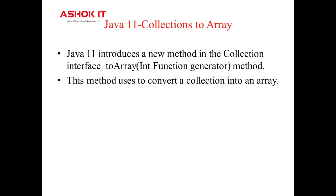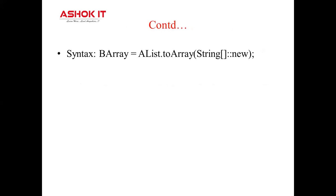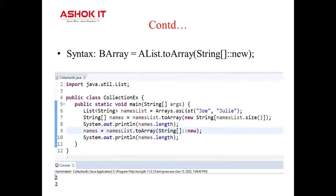The next Java 11 feature is collections toArray. Java 11 introduced a new method in the collection interface. The toArray method has been part of the collection interface since version 1.2, but Java 11 provides a new overloaded version that allows more control over the return array. The method introduced in Java 11 takes an IntFunction as an argument and lets you specify the type of the return array. In this example, we are converting a collection called nameList, which is a list, into an array.